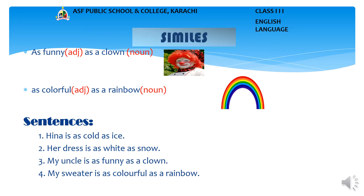Example 3: As funny as a clown. In this phrase, 'funny' is an adjective and 'clown' is a noun. This simile uses the word 'as' to compare funny and clown. Example 4: As colorful as a rainbow. Here 'colorful' is an adjective and 'rainbow' is a noun, compared using the word 'as'.